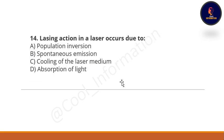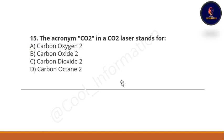Question 14: Lasing action in a laser occurs due to what? Option A: population inversion. Option B: spontaneous emission. Option C: cooling of the laser medium. Option D: absorption of light. The correct option is population inversion.